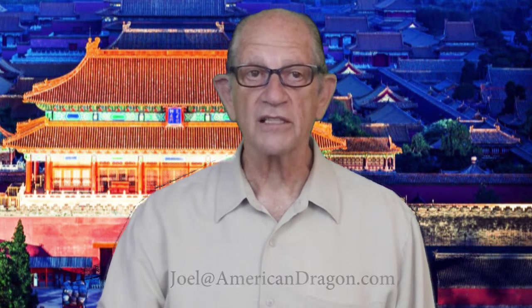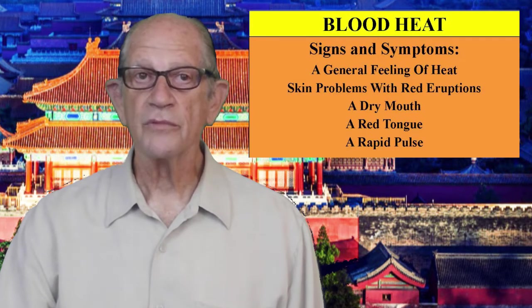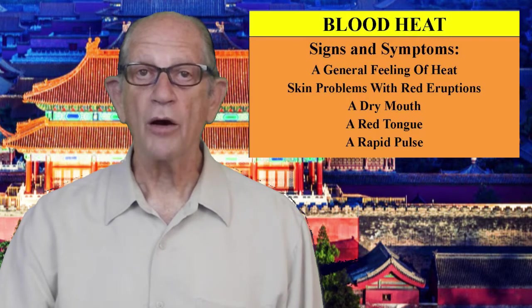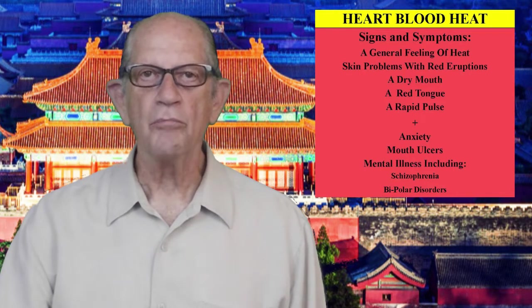The second excess blood condition is blood heat. Heat in the blood may cause blood to congeal and stagnate. Blood heat arises from external heat affecting the pericardium and can become chronic if the heat is unexpelled and lingers in the blood. This is described in detail in the Wenbing, which is part of Shang Han Lun Wenbing Diagnosis. Notes are available for $25 by contacting joel at americandragon.com. The general signs and symptoms of blood heat are a general feeling of heat, skin problems with red eruptions, a dry mouth, a red tongue, and a rapid pulse. If heart blood has heat, there will also be anxiety, mouth ulcers, and mental illness, including schizophrenia and bipolar disorder.